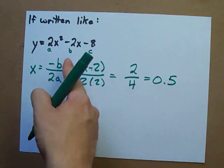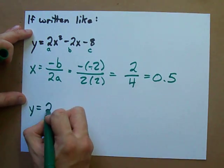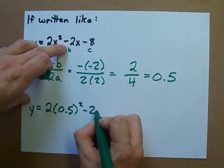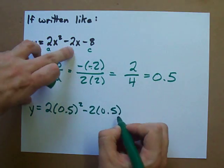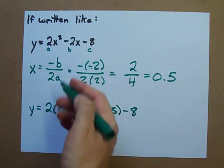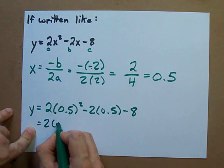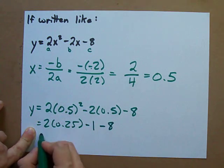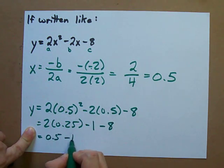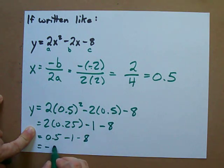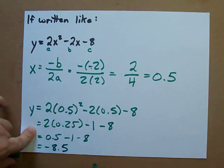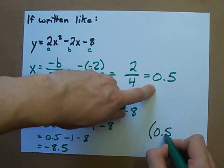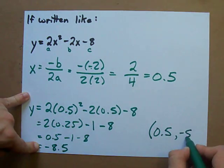Then, all you do is plug that back into your function. Because that is x, right? 0.5 squared minus 2, 0.5 minus 8. We can evaluate this. I get 2 times 0.25. You can do this on your calculator if you need to. What I get is 0.5 minus 1 minus 8, which turns out to be negative 8.5. And the vertex of this parabola turns out to be the x, 0.5, and the y, negative 8.5.